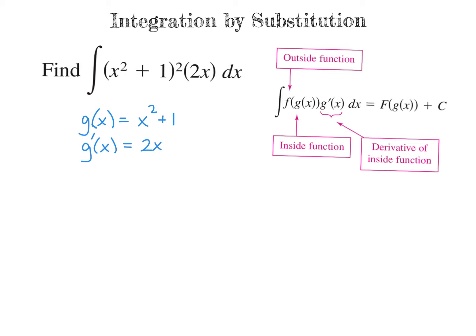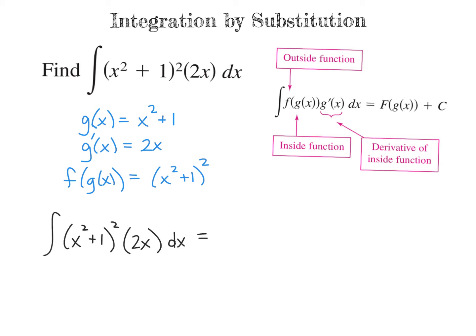Our outside function — what's happening to g of x — is that it's being squared, so f of g of x is g of x being squared. Following the formula, we find the antiderivative of f with g of x inside untouched. Our f function is something squared, so using the power rule for integration, we raise that something to the third power and divide by 3, giving us one-third times x squared plus 1 to the third power, plus c.